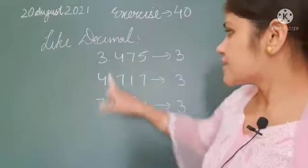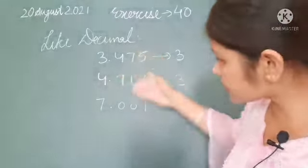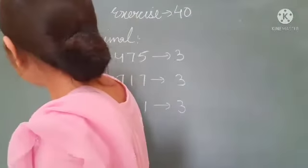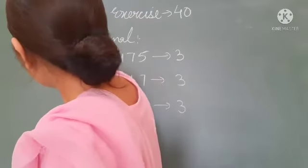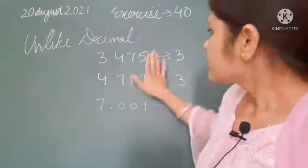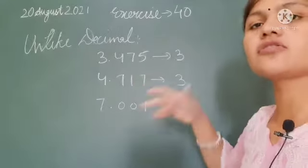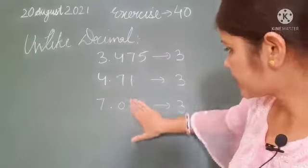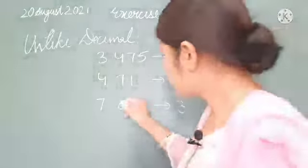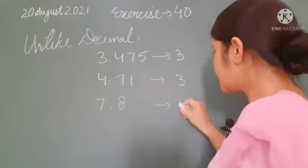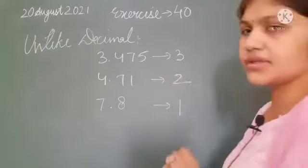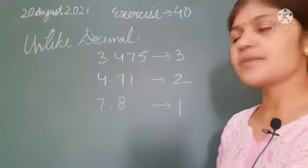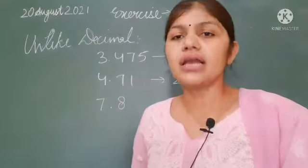So this type of decimals, which have the same number of decimal places, are called like decimals. When we talk about 'unlike' — different decimal places — for example, here decimal places are one, here two, and here three. Since decimal places are different, these are known as unlike decimals.